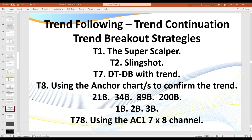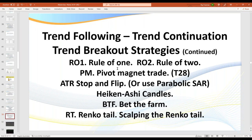With trend following there's a range: your 21B, 34, 89, 200 — they're all related, all trend-following, all EMA bounces. We've got the rule of one on Renko or the rule of two on range charts. I want you to notice the T28, which we call the pivot magnet trade — a brilliant strategy that kicks butt nearly every day in any trending market. You've probably heard of pivots, floor pivots — what you can also use, just as powerful, is open, high, low, and close, and also major EMAs. They work really well.